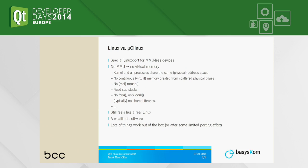Before I go on, a short interlude: uCLinux is not so well known, so I'll try to explain the difference from regular Linux. It's a special Linux port for MMU-less devices, which means no virtual memory, and that has a number of dire consequences. The kernel and all processes share the same physical address space — you have no protection.